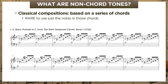This is the first prelude of Bach's massive set called the Well-Tempered Clavier. As we listen, notice two things: Bach changes chords at a very regular rate—one chord per bar—and each bar contains only the notes of the chord Bach is using. He simply arpeggiates each chord twice in each bar.